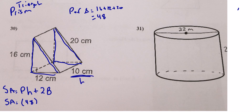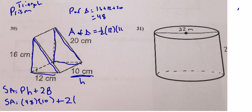The height here is the height of the entire figure — this is a figure laying on its side. Area of the triangular base = ½ × 12 × 16: half of 16 is 8, and 8 × 12 = 96. So surface area = (48 × 10) + 2(96) = 480 + 192 = 672 square centimeters.